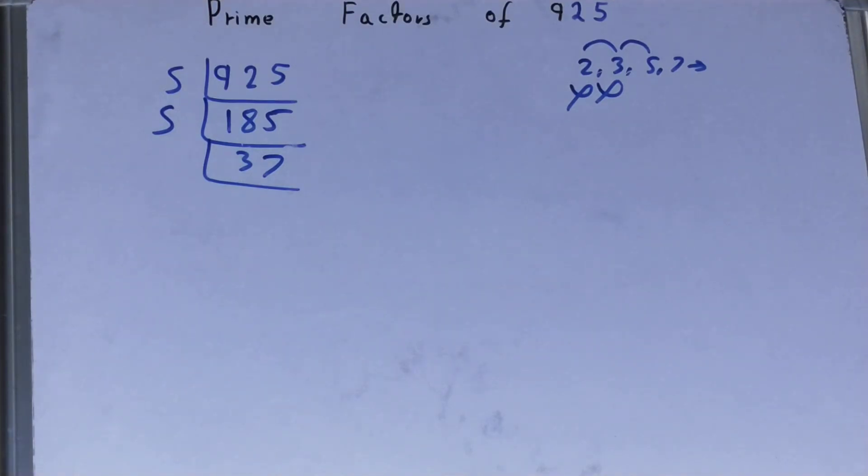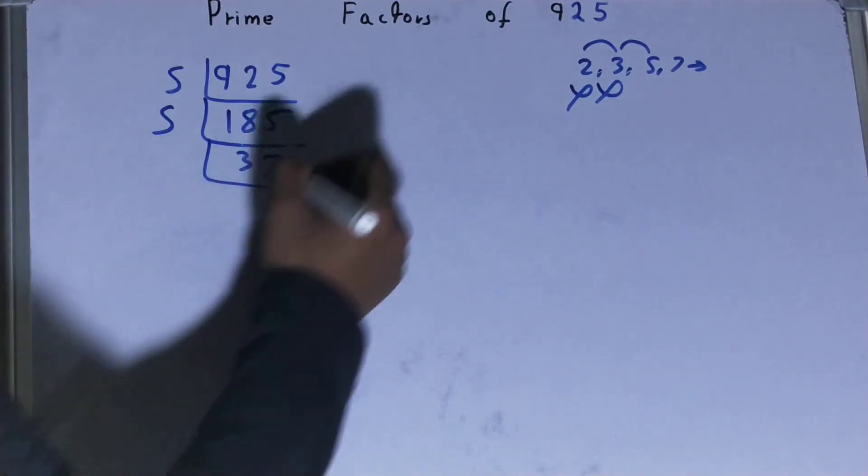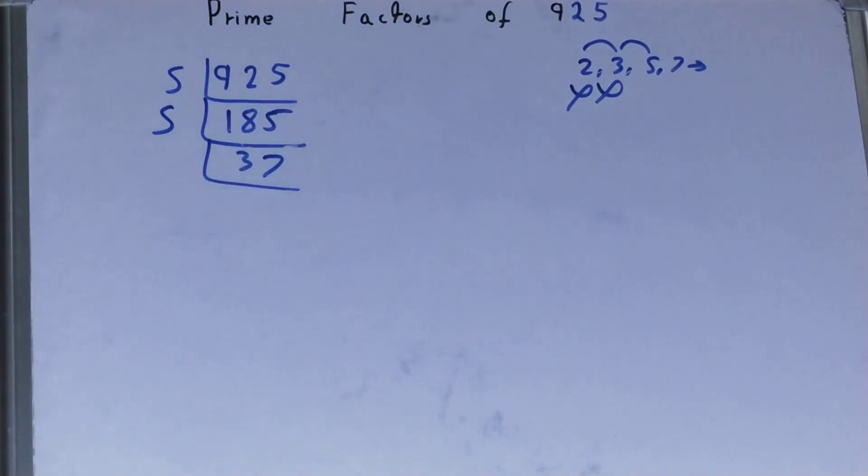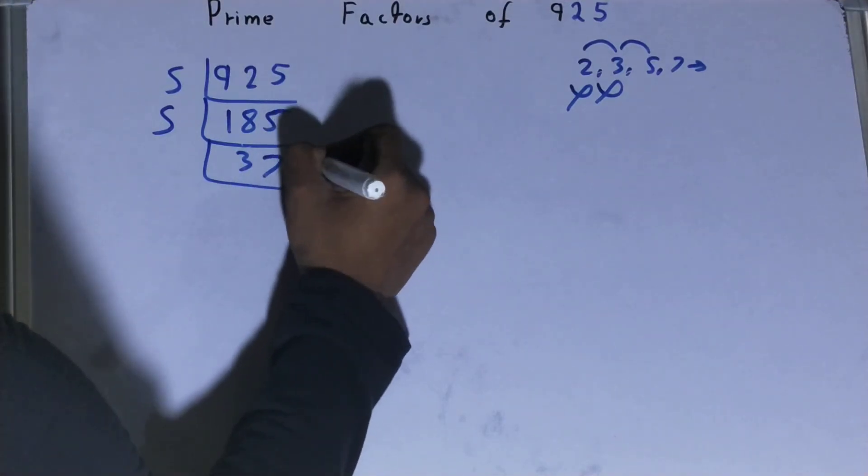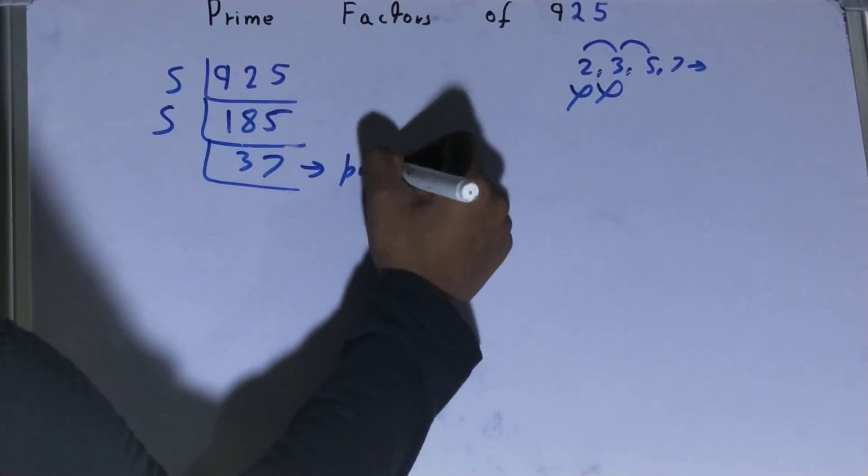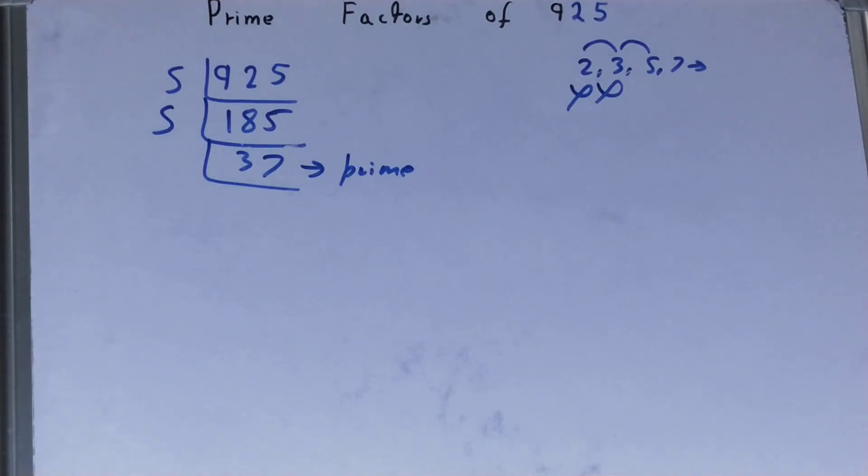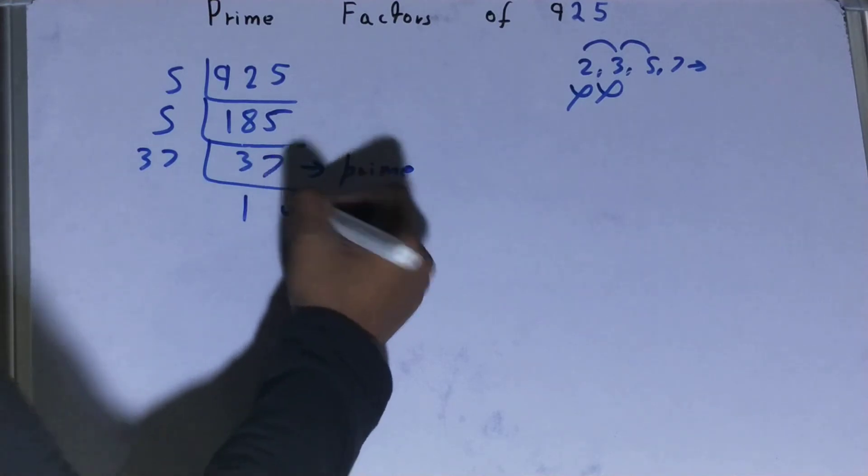...is further not divisible by 5 because the last digit is neither 5 nor 0. So 37 is also a prime number, and 37 is only divisible by itself. So to divide this 37, you need 37 on the left-hand side, and when you do so, you will be left with 1. Once you are left with...